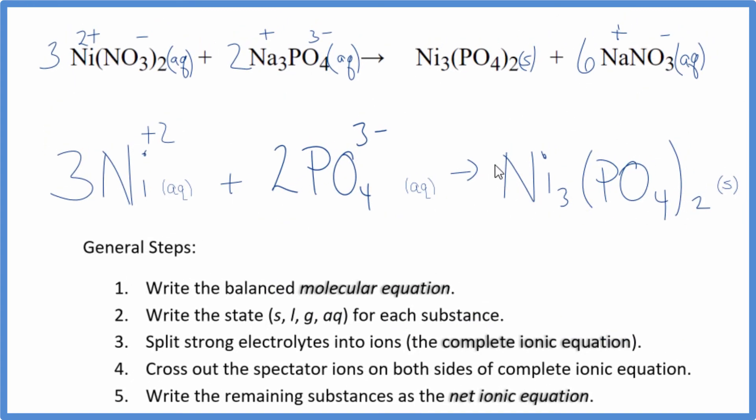So this is the balanced net ionic equation for nickel(II) nitrate plus sodium phosphate. You can see that charge is conserved. I have three times plus two, that gives me a plus six. Two times the minus three, that's minus six. So they balance out, net charge of zero. This is a neutral compound. Net charge is zero.